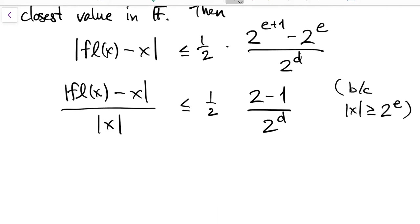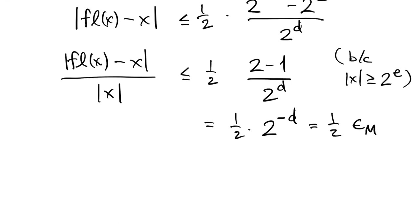And so, we find the relative error in the representation is bounded by a half times this number, 2 to the minus d, and this is an important value that we call machine epsilon. It's also sometimes called unit roundoff or machine roundoff.